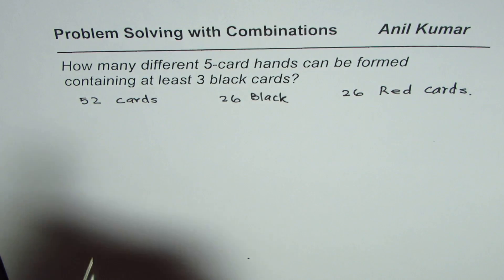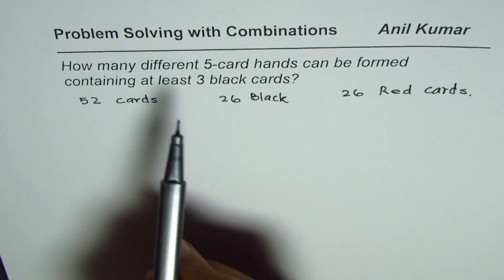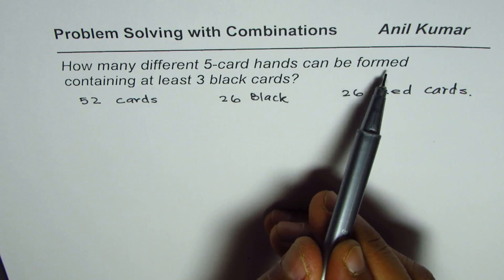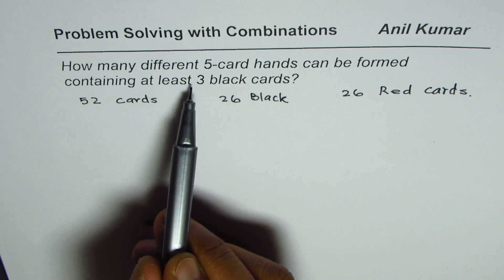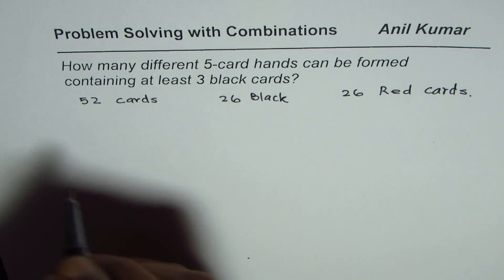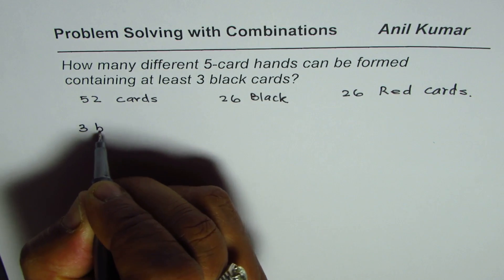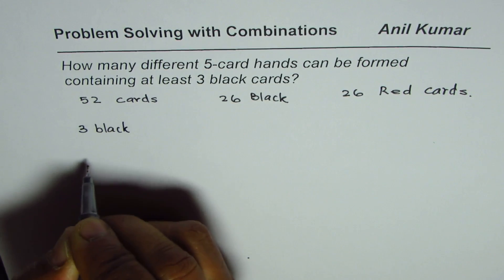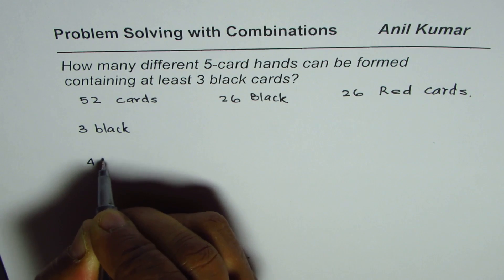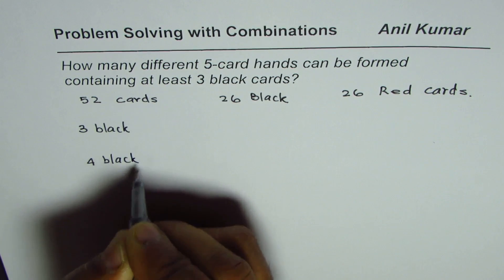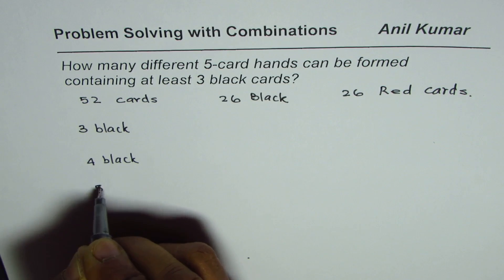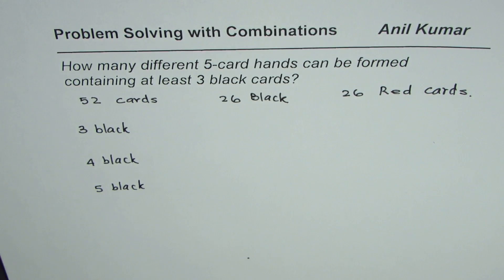The question is, how many different five card hands can be formed containing at least three black cards? That means we're looking for combinations with three black cards, or we could have four black cards, or we could have five black cards.